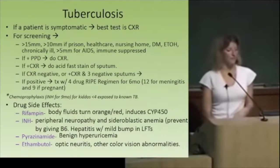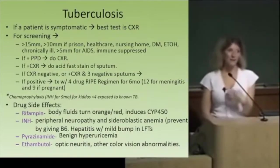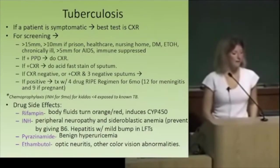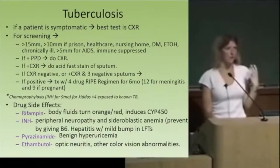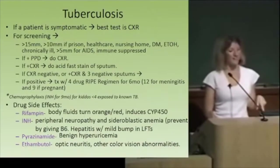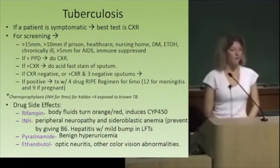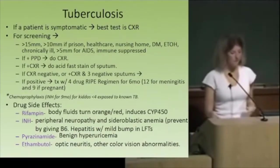If the chest X-ray is positive, treat for six to nine months with four-drug treatment, then narrow down after sensitivities come back. Chemoprophylaxis with INH is only given to little babies or kids under age four who have known contact with proven TB. Everybody else — you don't treat until you diagnose it. Just being exposed isn't enough to warrant treatment.